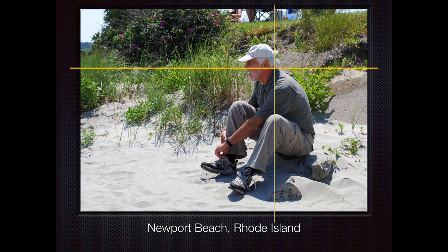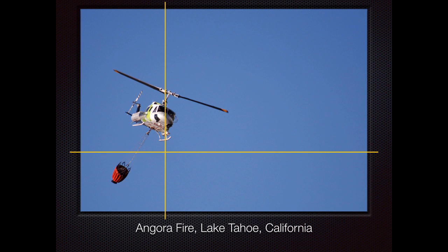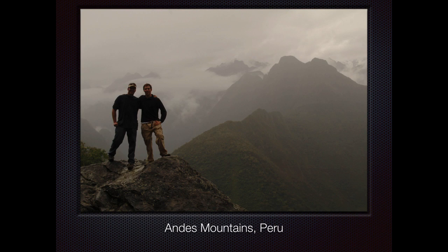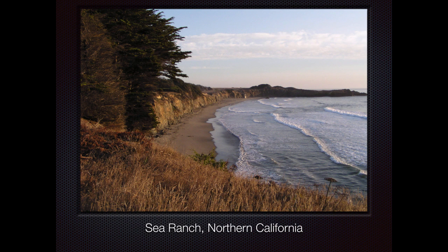Even when photographing a person, using the rule of thirds rather than centering them gives much better results. In this beach photograph, rather than just centering the person, he's on the third line and looking toward the open space — by giving more space on that side, we're interested in what he's looking at rather than just looking at him. His eye level is also at the top third of the image. The natural thing is always to put people in the center, but shift your thinking — put them on the third line and it will make your photos better.